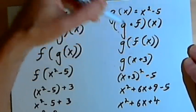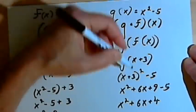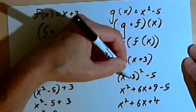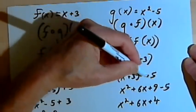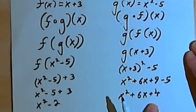Now all we do is take that g of x function and replace the x with x plus 3, which gives us, in this case, x plus 3, that whole expression squared, minus 5. And then we simplify that and we get our answer.